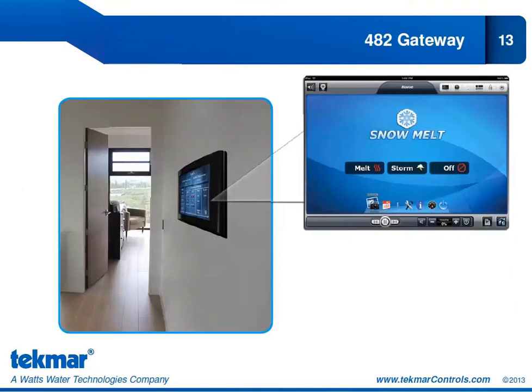We can also connect our 654 to a gateway 482. By touching the home automation screen, we can put our snowmelt system into the melt state, the storm state, or turn it off — it's like having a user switch built into your home automation. The ability to operate snow melting using a gateway 482 is subject to support by the home automation driver, so you should consult with your home automation company for details on whether they have written the driver or when they plan to do so.